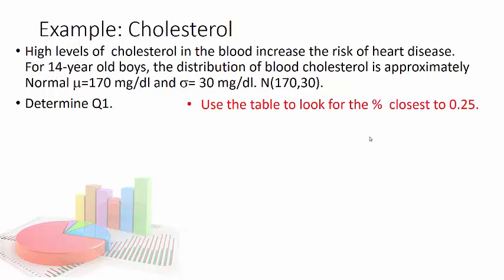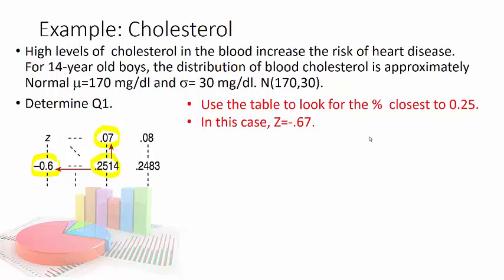First of all I'm going to use a table to look for the number percent closest to 0.25. So looking at the table I see that 0.25 is closest to 0.2514. So there it is and I'm going to use negative 0.6 and then put the 7 after the negative 0.6. So in this case z is negative 0.67.